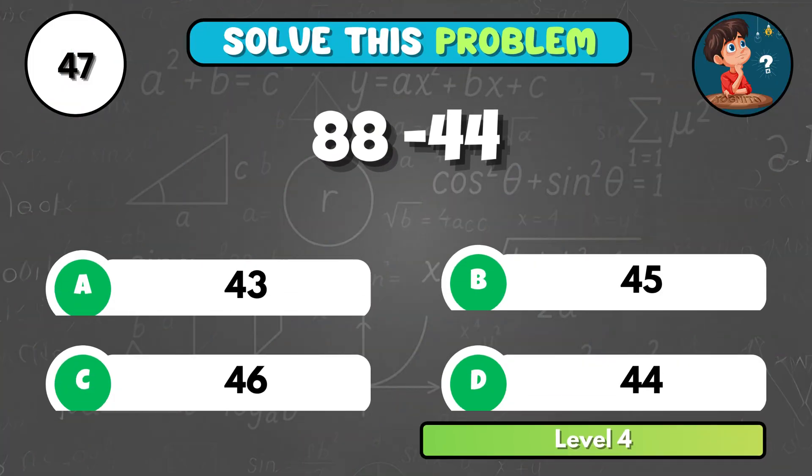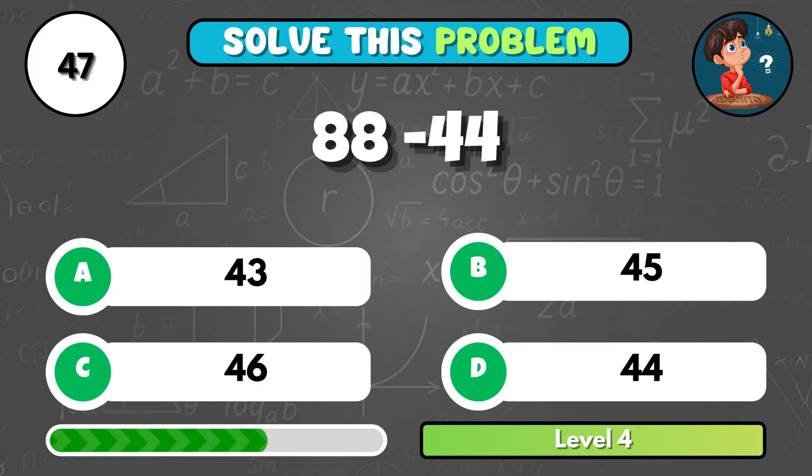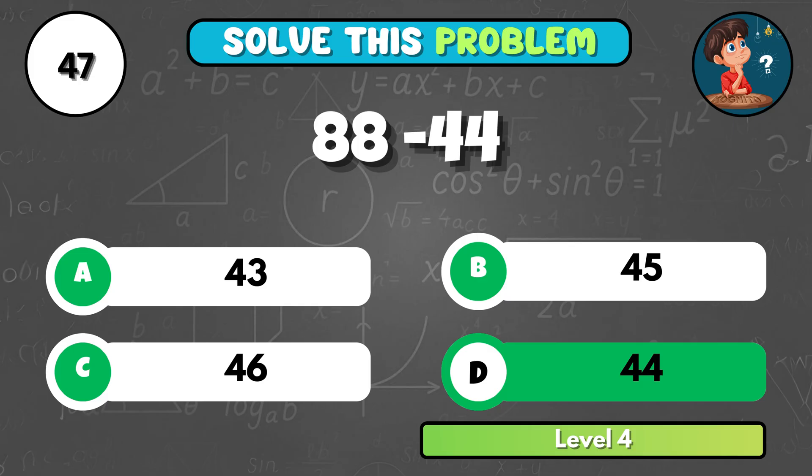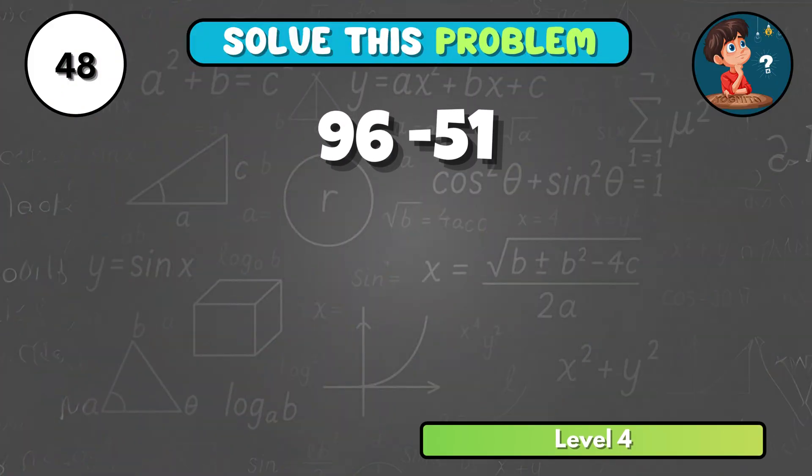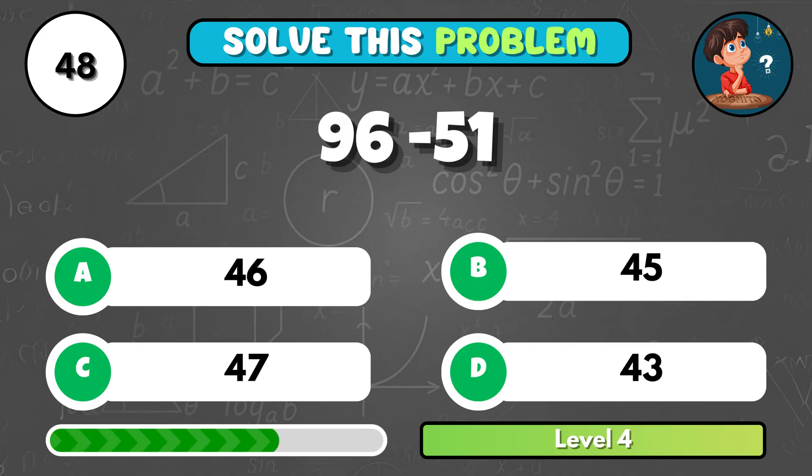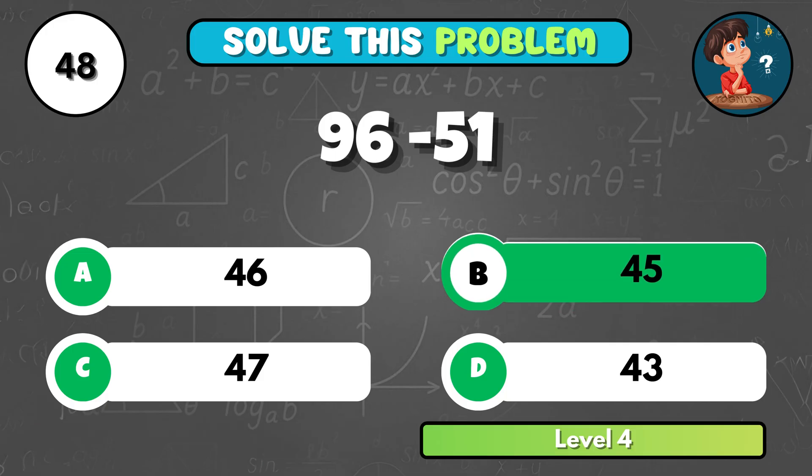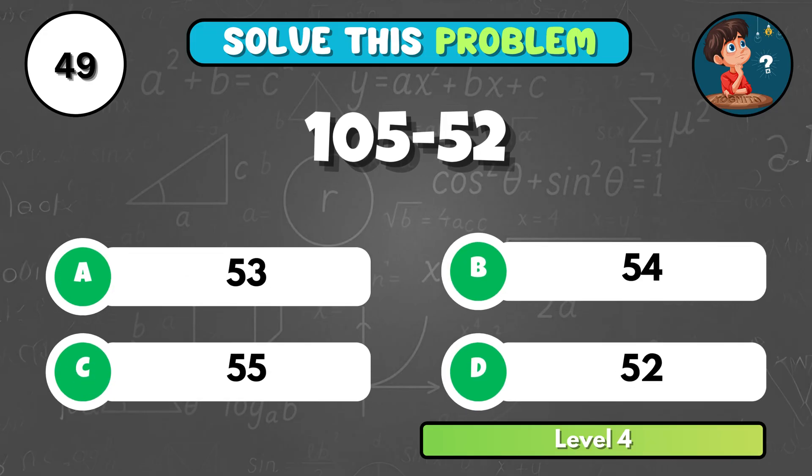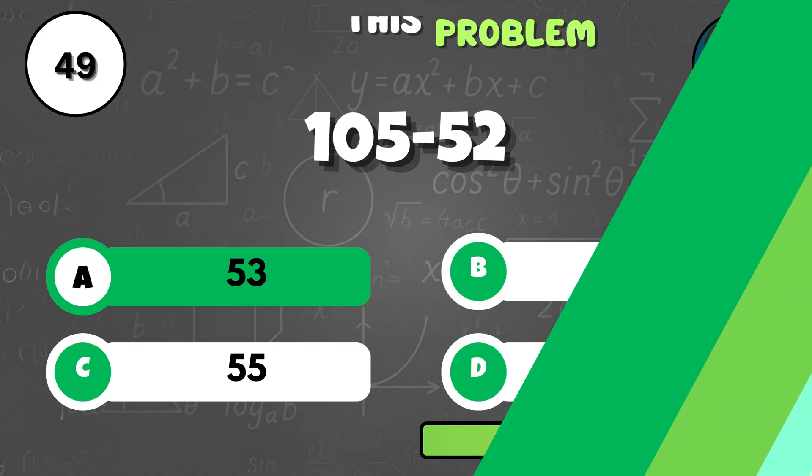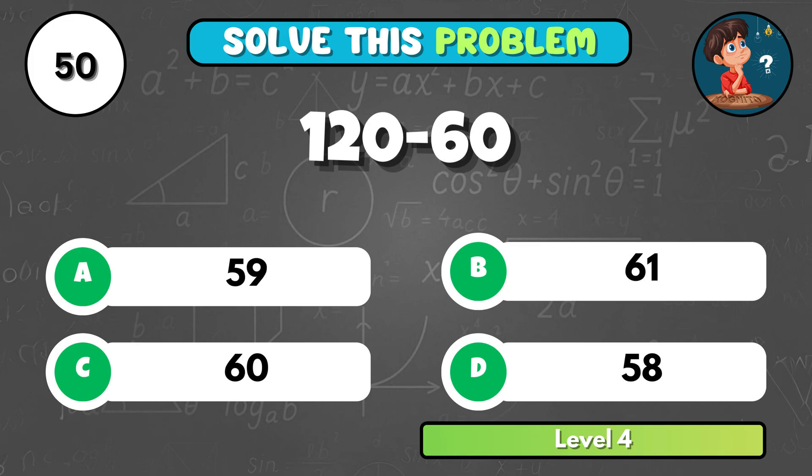What's 88 minus 44? That's D, 44! Let's test your skills! 96 minus 51 equals what? It's B, 45! Nearly done! 105 minus 52 equals... That's A, 53! And the final one! 120 minus 60 equals what? It comes to C, 60!